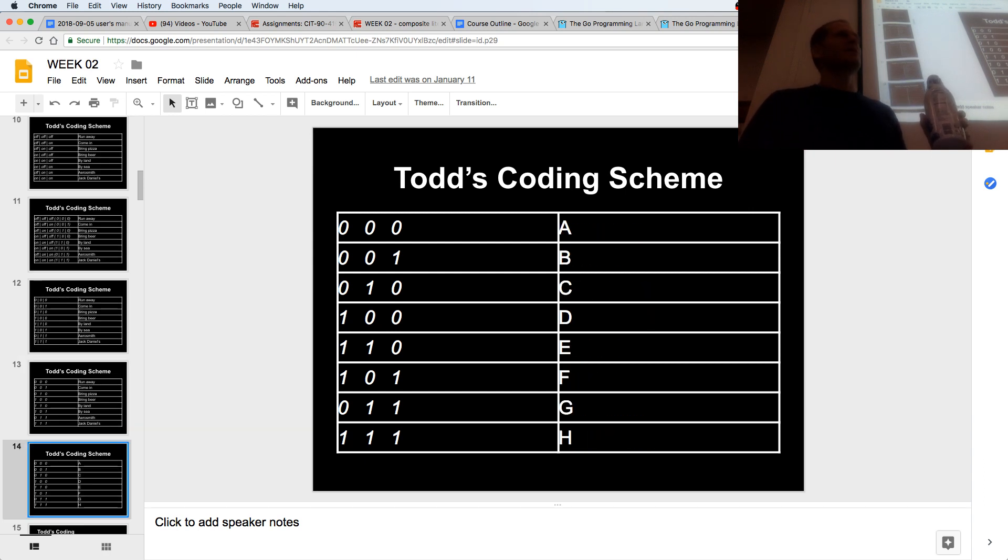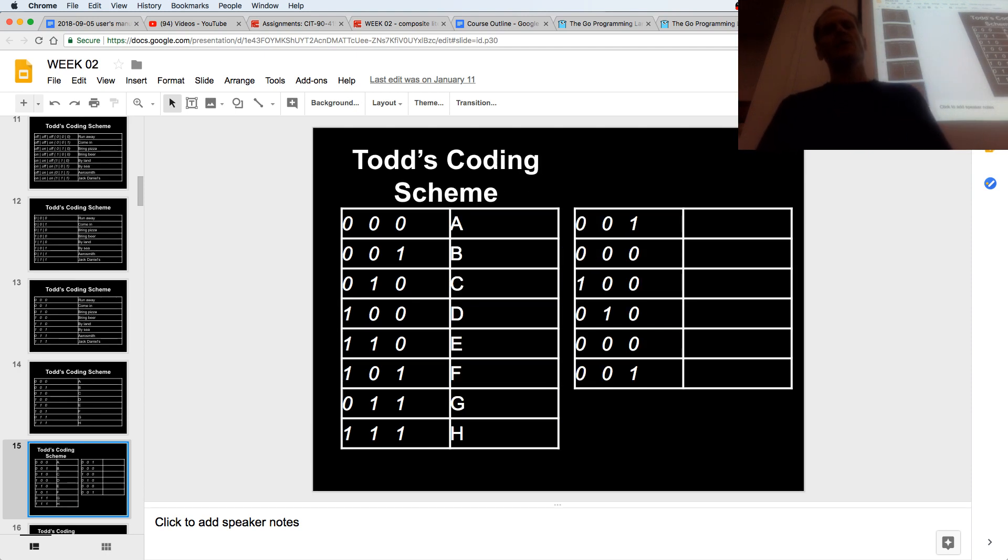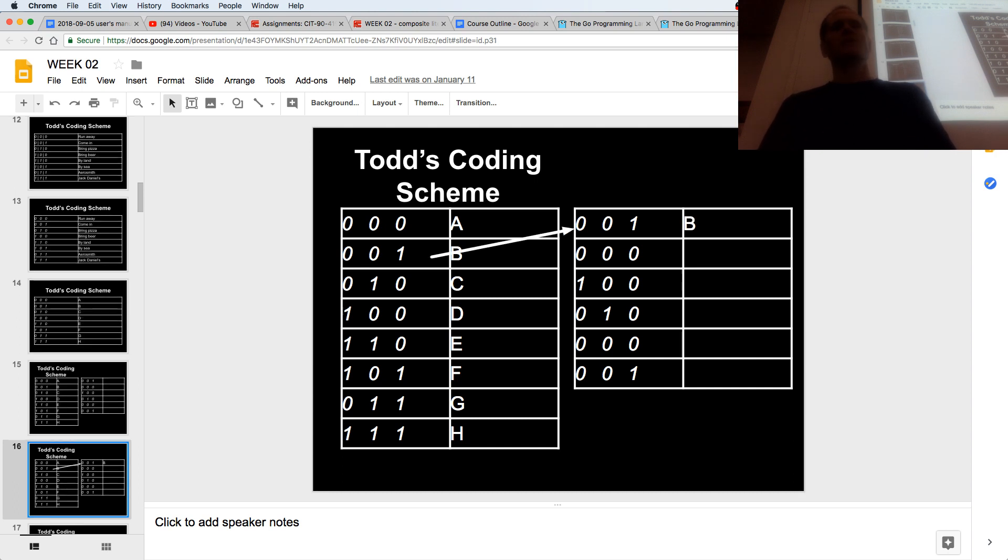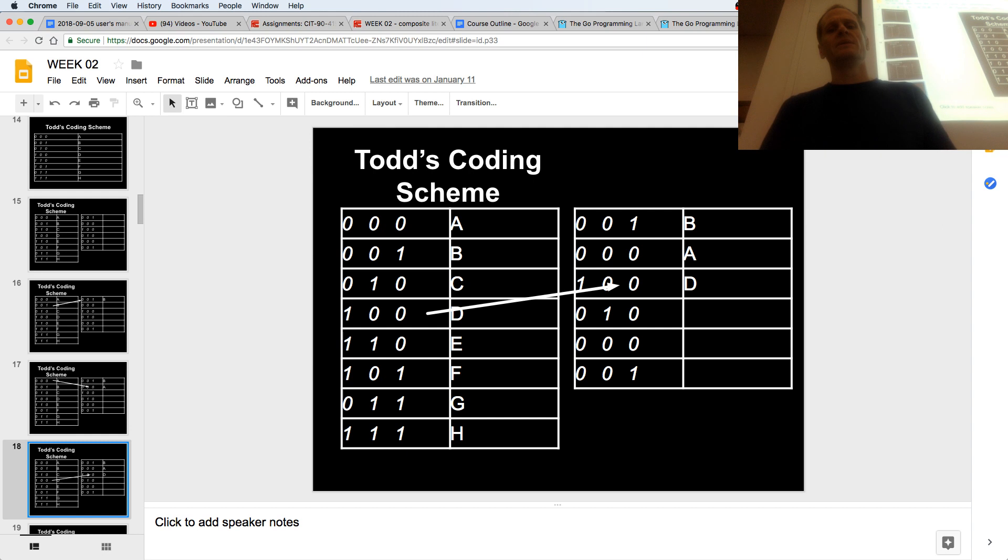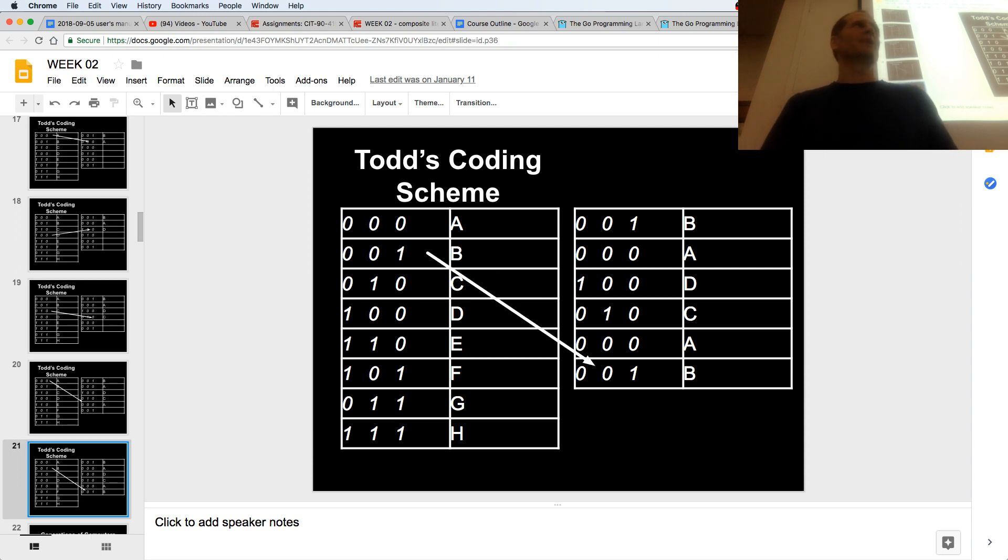And instead of having some wacky coding scheme, I could encode letters of the alphabet. So that's what UTF-8 is, it's just a coding scheme. And if I wanted to, well, I'll come back to that in a second. So if I had this coding scheme, what does 001 represent? Which letter? B, right? What about 000? A. 100? D. 010? C. A, B, bad cap. All I could come up with with eight letters, right?